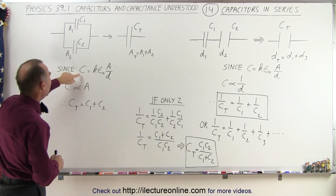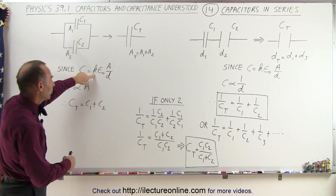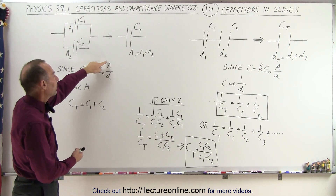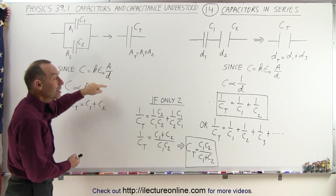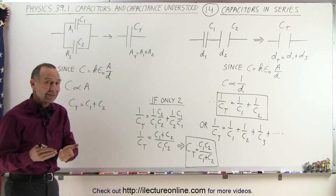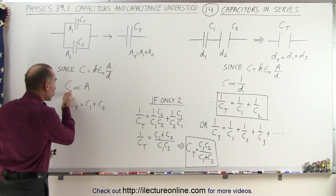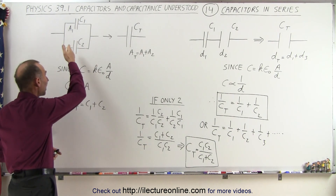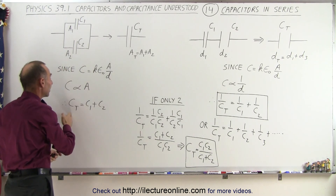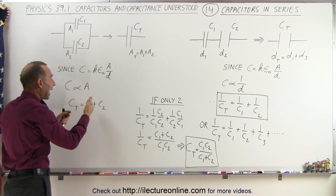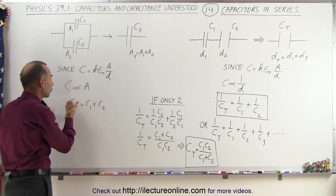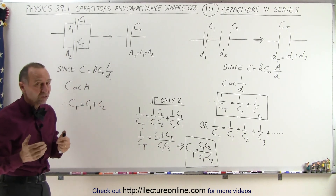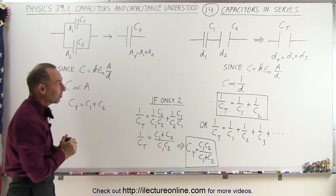Since the capacitance is equal to k — the dielectric constant — times epsilon sub-naught times A over d, we realize that the capacitance is proportional to the area. So therefore, when we add capacitors in parallel together, it's like adding their areas, and the total capacitance is simply equal to the algebraic sum of the two capacitors.